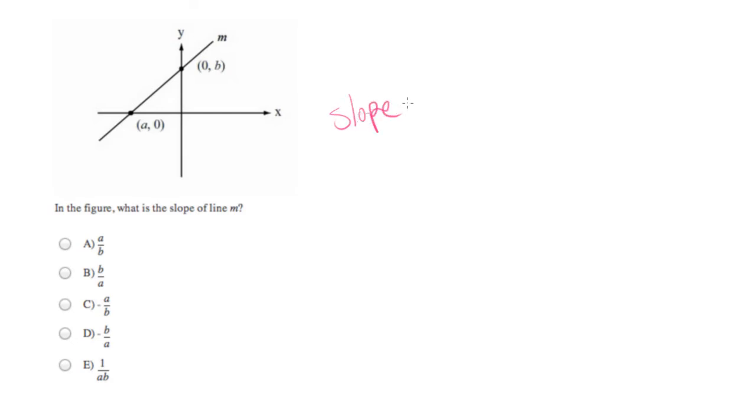So the slope of a line will be equal to the rise of that line over the run of that line. Some people like to remember this broken down a little bit more.